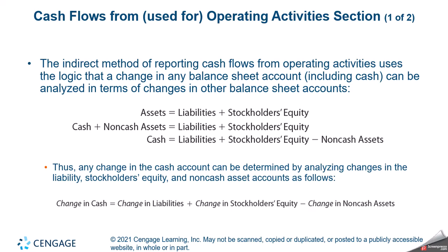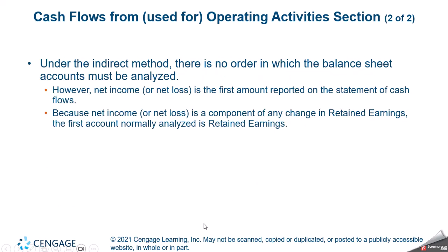Now we get into the operating activities section. We are looking at our changes in current liabilities, changes in current assets, and changes in stockholders' equity — though equity doesn't really impact the operating section directly, except that net income is the starting point and it is part of retained earnings, which is in our equity account.